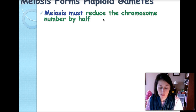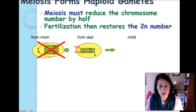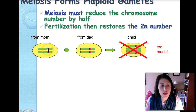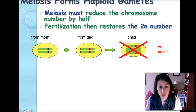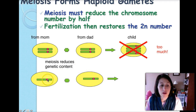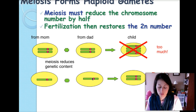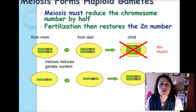If each parent gave two copies of the same chromosome, the child would be polyploid — having four sets of those chromosomes — and that would be a bad thing. So meiosis reduces the genetic content. The egg cell from mom has one of those chromosomes and the sperm cell from dad has one, so when they come together during fertilization the child will have just the right number — that's what we call restoring the diploid number.